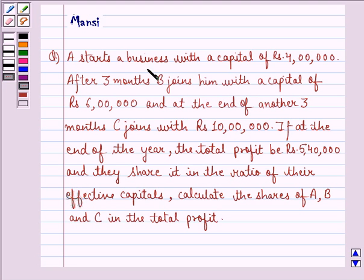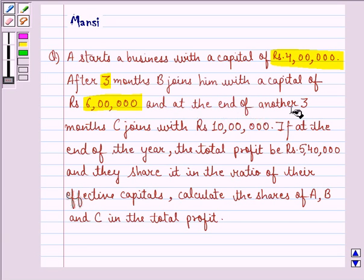The question says A starts a business with a capital of rupees 4 lakh. After 3 months B joins him with a capital of rupees 6 lakhs and at the end of another 3 months C joins with rupees 10 lakhs. If at the end of the year the total profit is rupees 5 lakh 40,000